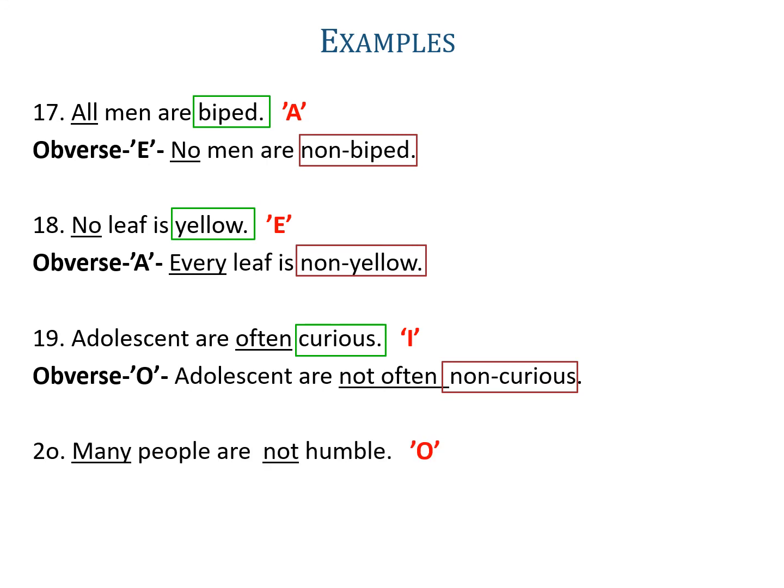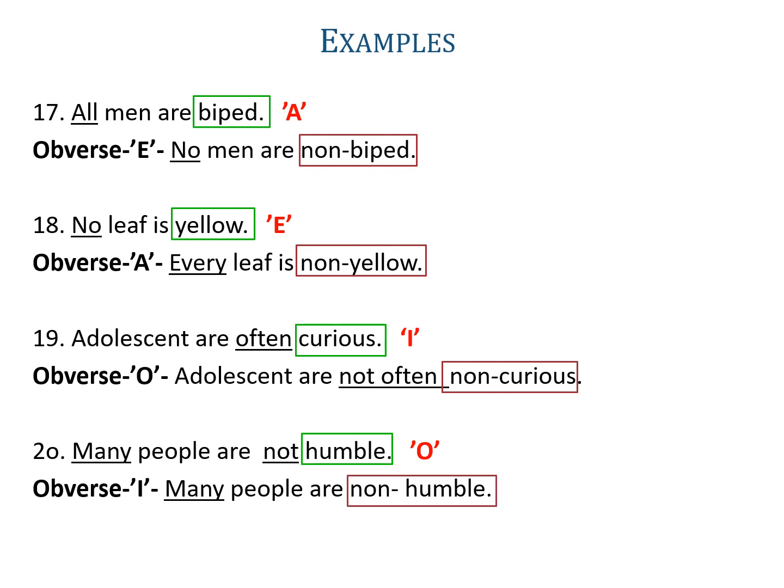Example twenty: 'Many people are not humble.' Here many and not is used, so it is an O-proposition, and its obverse will be I. The predicate is humble, whose complementary will be non-humble. So the obverse will be 'many people are non-humble'.